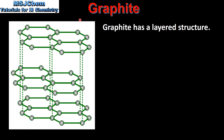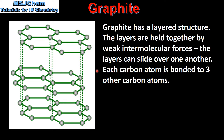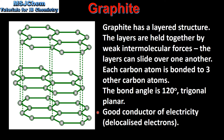We will start by looking at graphite. Graphite has a layered structure which we can see here on the left. The layers are held together by weak intermolecular forces. Because the layers can slide over one another, graphite is very soft. In graphite, each carbon atom is bonded to three other carbon atoms. The bond angle between the carbon atoms is 120 degrees, which is trigonal planar. Graphite is a good conductor of electricity because it has delocalized electrons.